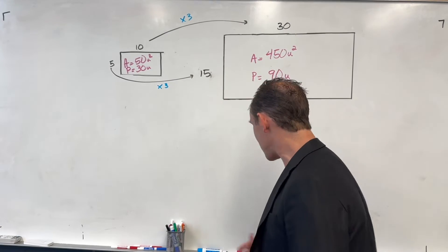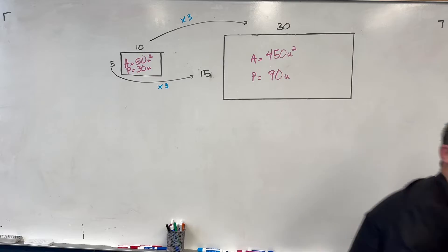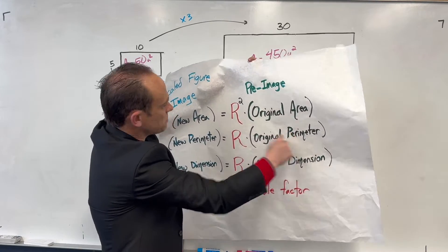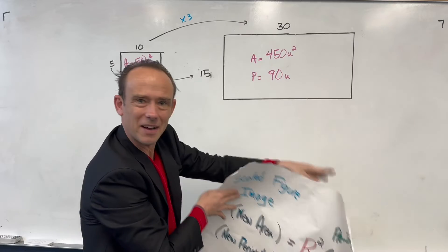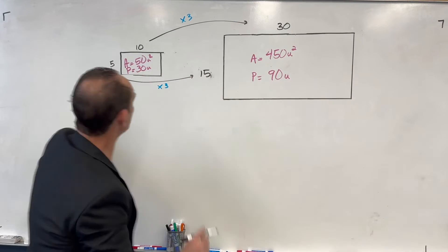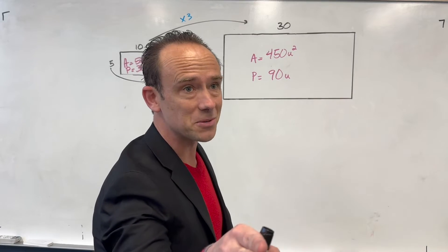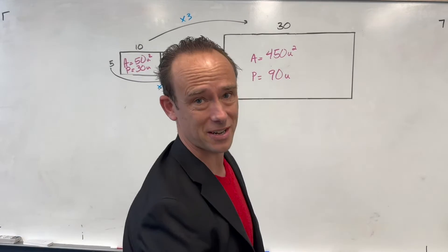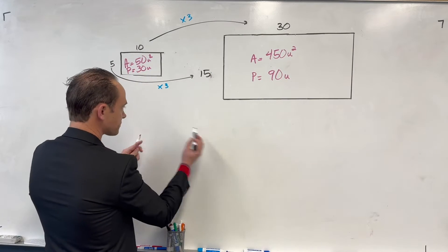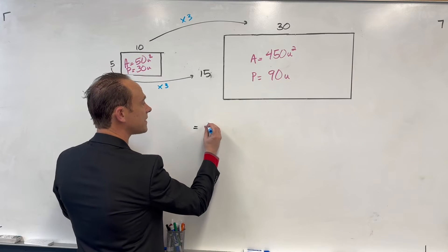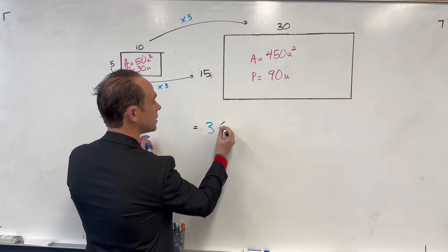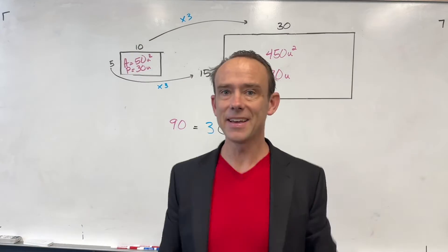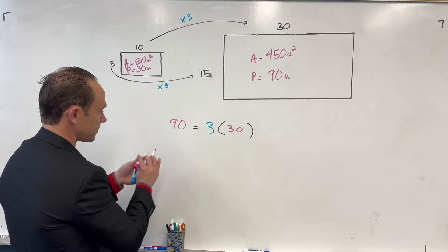I'd rather you go back to the poster. The poster says we knew the original perimeter, so we just multiply it by the scale factor to get our new perimeter — no redrawing required. Original perimeter was 30, so new perimeter = scale factor × old perimeter = 3 × 30 = 90. No drawing needed.